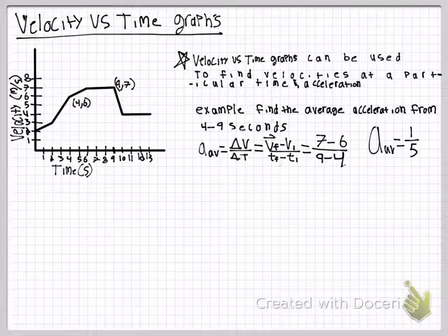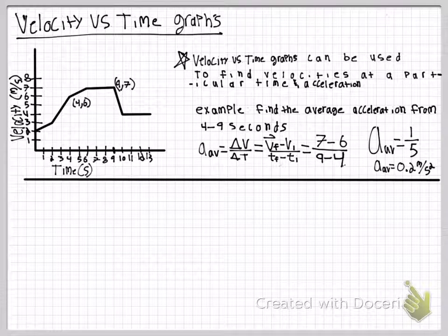This leads us to 1 divided by 5, or an average acceleration of 0.2 meters per second squared.